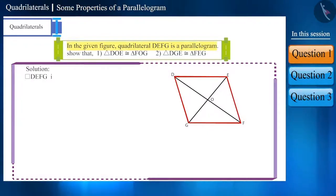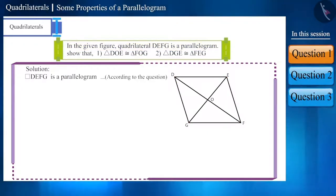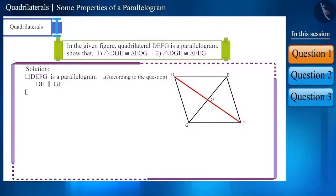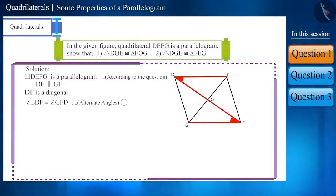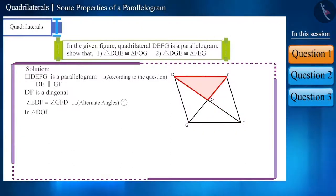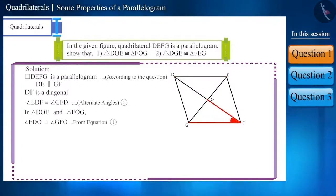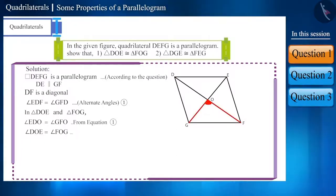According to the question, DEFG is a parallelogram. Therefore, sides DE and GF will be parallel. If we consider DF a diagonal, then angle EDF and angle GFD will be alternate angles, and we know that alternate angles are equal. So in triangles DOE and FOG, angles EDO and angle GFO are equal. Angle DOE and angle FOG will also be equal because both are vertically opposite angles.